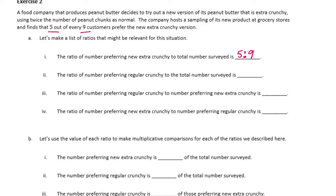Second, the ratio of customers preferring regular crunchy to the total: since five out of nine preferred extra crunchy, four out of nine preferred regular, giving a ratio of four to nine. Third, the ratio of regular crunchy to extra crunchy is four to five. Fourth, the ratio of extra crunchy to regular crunchy is five to four.